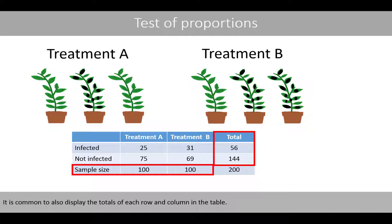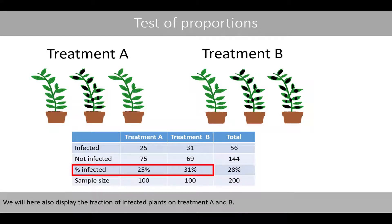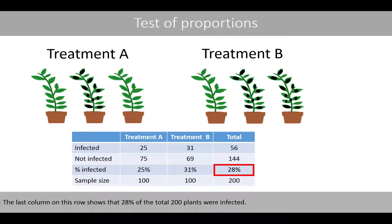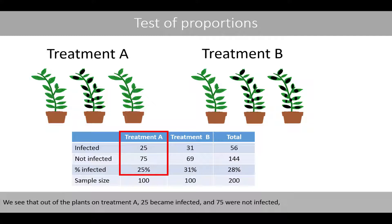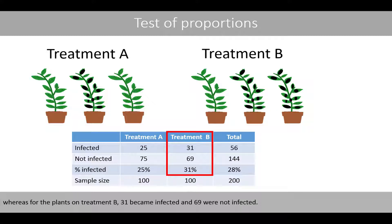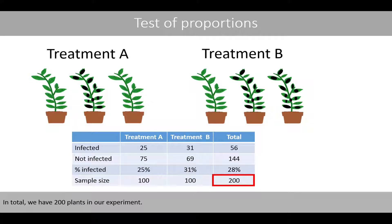It is common to also display the totals of each row and column in the table. We will also display the fraction of infected plants on treatment A and B. The last column on this row shows that 28% of the total 200 plants were infected. Of the plants on treatment A, 25 became infected and 75 were not infected, whereas for the plants on treatment B, 31 became infected and 69 were not infected. In total, we have 200 plants in our experiment.